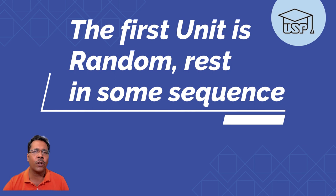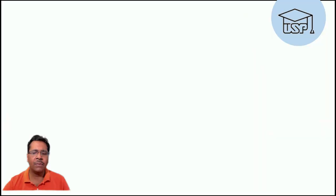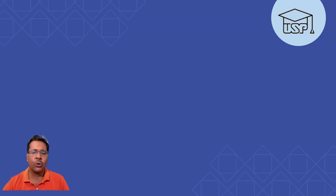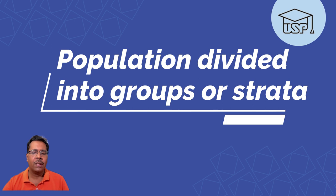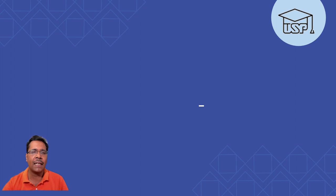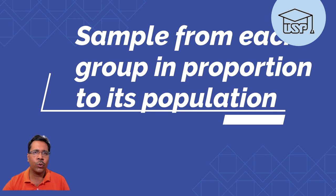Stratified random samples are used when populations can be broken down into different subgroups or subsets based on certain criteria, such as age or gender. The elements from each subgroup or strata are then randomly chosen in proportion to the group's size versus the population. For example, we might divide each group into boys and girls and take equal representations from each.